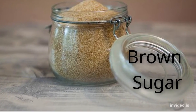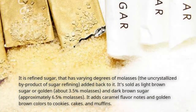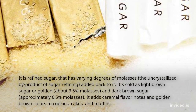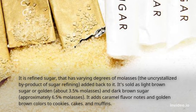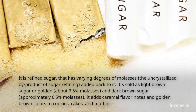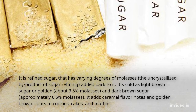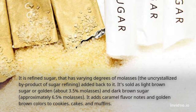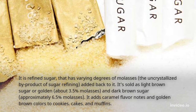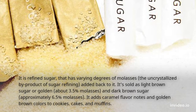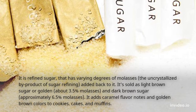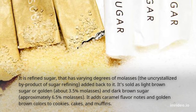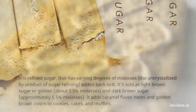Brown sugar. It is refined sugar that has varying degrees of molasses — the uncrystallized by-product of sugar refining — added back to it. It's sold as light brown sugar or golden, at about 3.5% molasses, and dark brown sugar, at approximately 6.5% molasses. It adds caramel flavor notes and golden brown colors to cookies, cakes, and muffins.